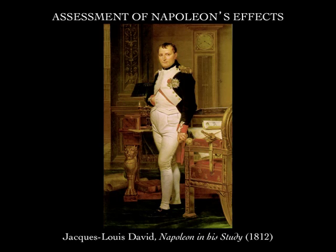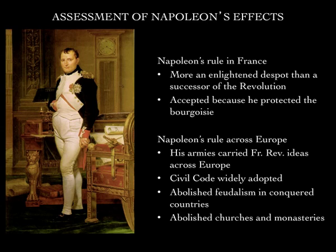Now let's consider Napoleon's effect on his contemporaries as well as on history. We can look at Napoleon in two ways. Napoleon's effect in France itself is sort of plus and minus. He was seen more as an enlightened despot than a successor of the Revolution, and was accepted and supported mainly because he protected the propertied classes and the bourgeoisie. He also gave the peasantry and the nobility what they wanted, so they all accepted him.